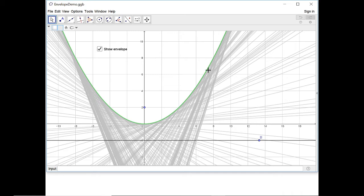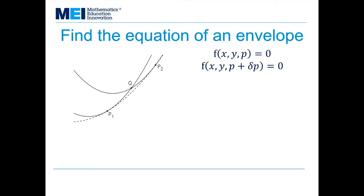So let's have a look at how we can find the equation of the envelope. I've got here two curves from a family and I've got a dotted line which is showing the envelope of this family. These particular two curves are both from a family of parabolas, but the same technique will work regardless of which curves I'm using.